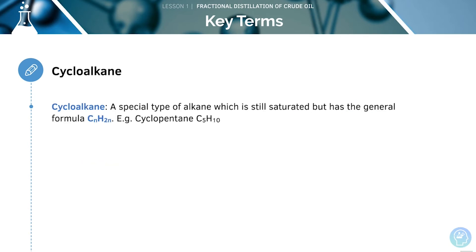Cycloalkanes are special types of alkanes which are still saturated that have the general formula CnH2n. For example, cyclopentane is C5H10.